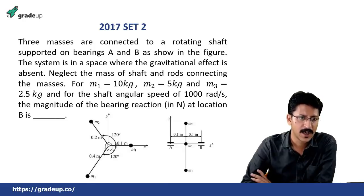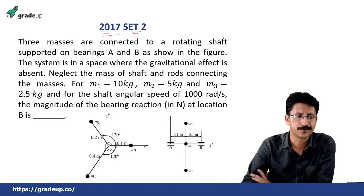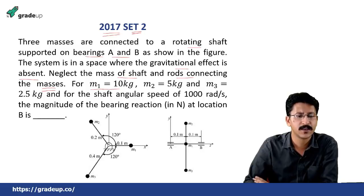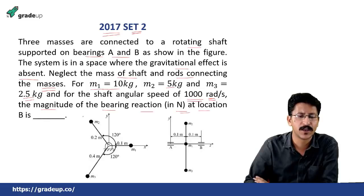Next question. Asked in GATE 2017 set 2, three masses are connected to a rotating shaft supported on bearings A and B as shown. See, these are the two bearings, these are the three masses, m1, m2 and m3. The system is in a space where the gravitational effect is absent. Neglect the mass of shaft and rods connecting the masses. For m1 equal to 10 kg, m2 equal to 5 kg and m3 equal to 2.5 kg and the shaft angular speed of 1000 radians per second, the magnitude of the bearing reaction in Newton at location B is.